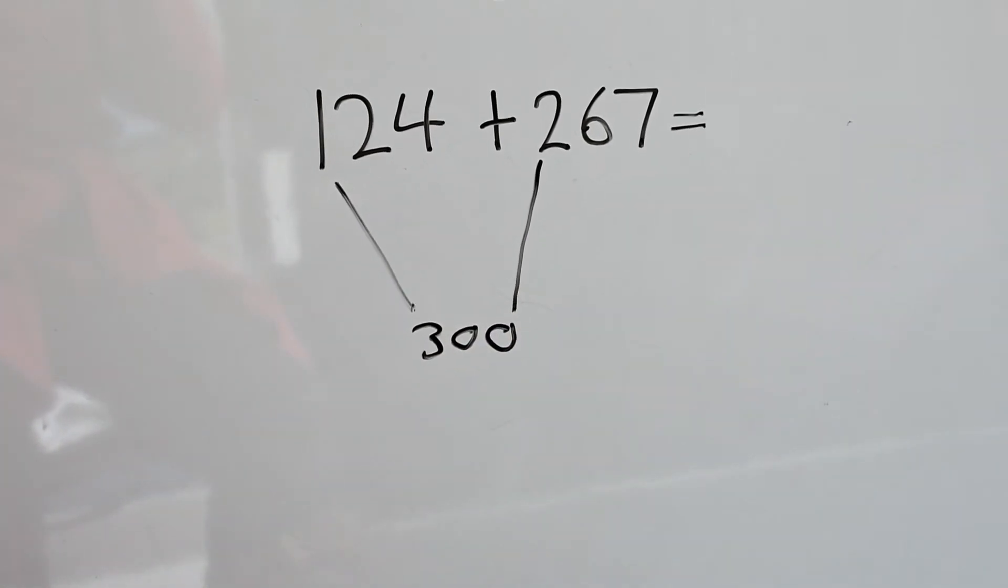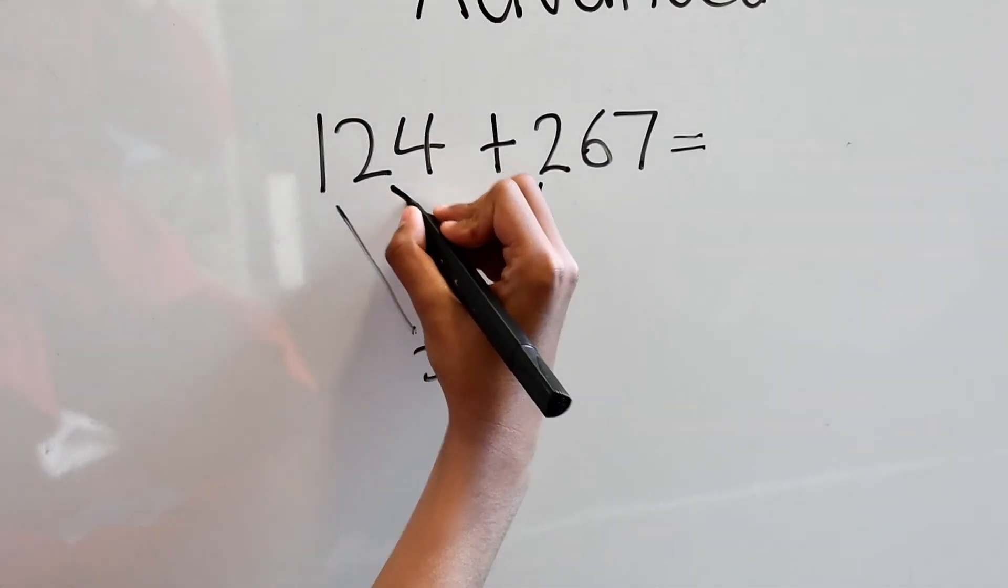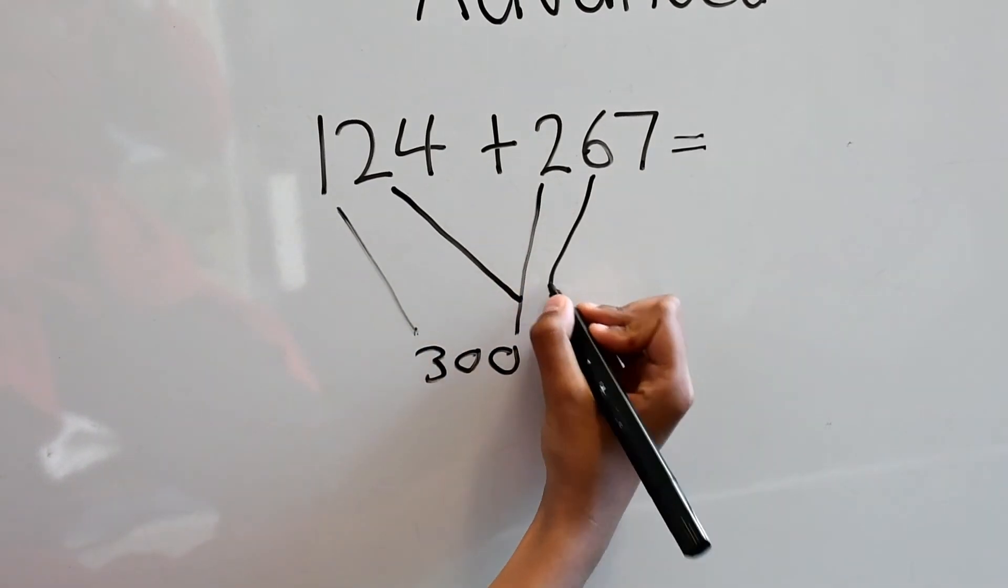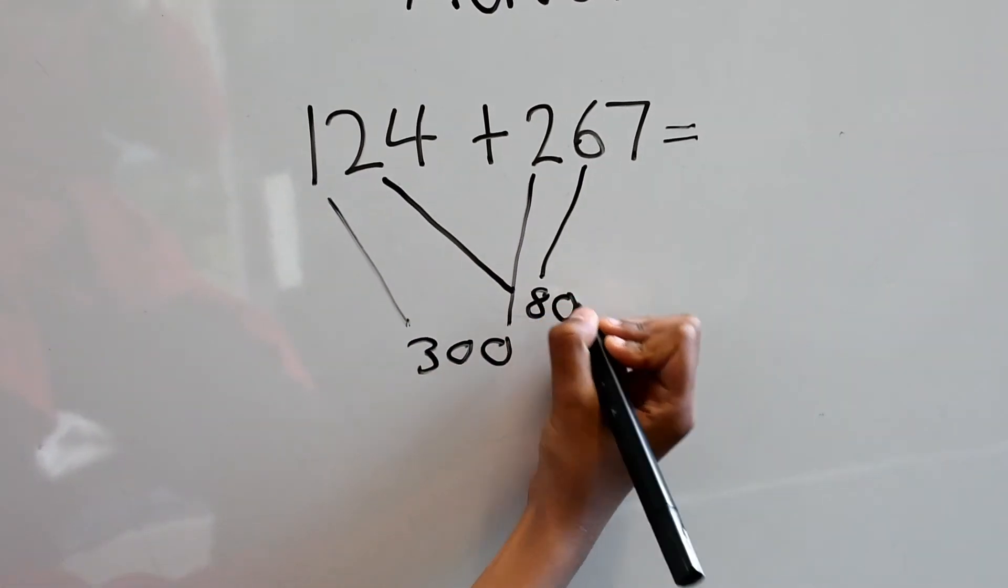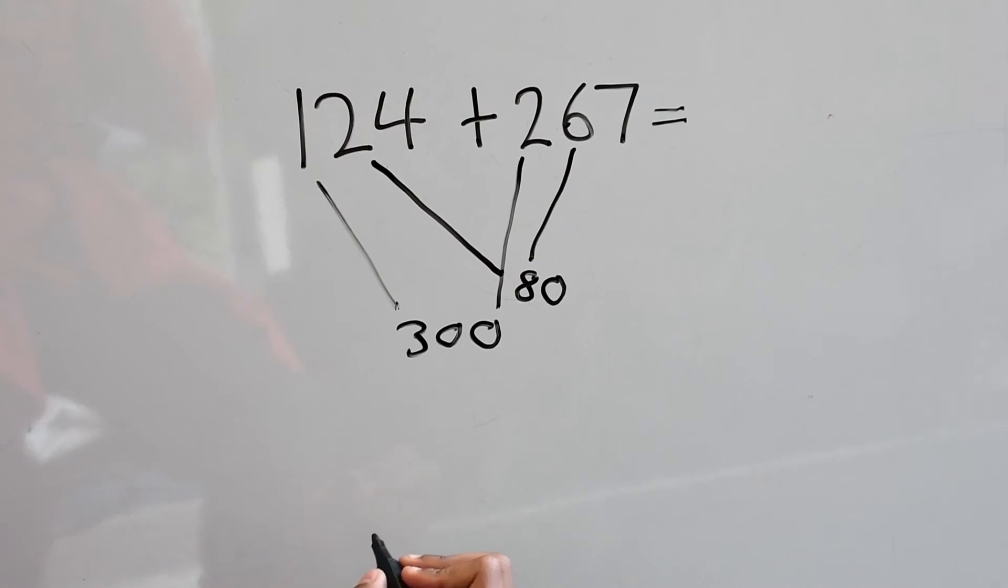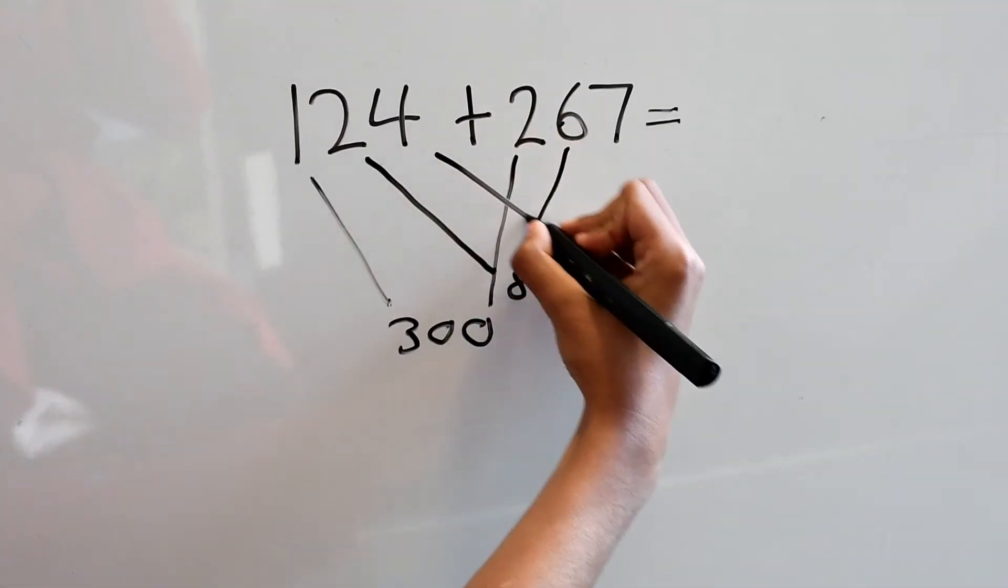Next we go to the tens. So that's 2 and 6 which equals 80. And finally the ones, 4 and 7, that equals 11.